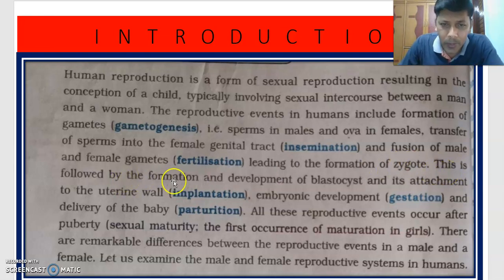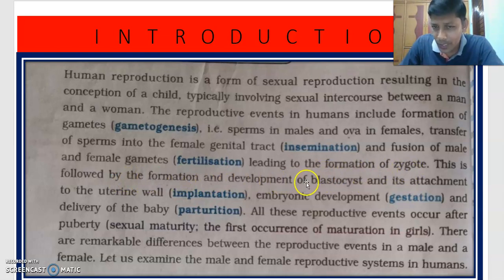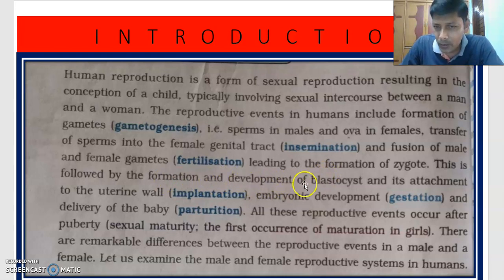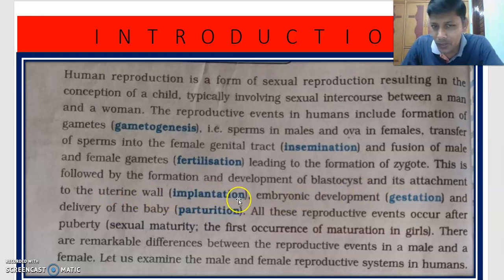This is followed by formation and development. The zygote develops into a morula, then into a blastula, and formation of a blastocyst and its attachment to the wall of the uterus, that is called implantation.